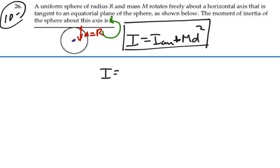So the moment of inertia is going to equal the moment of inertia of a sphere, which is two-fifths MR squared, plus Md squared. But in this case, d is equal to R.